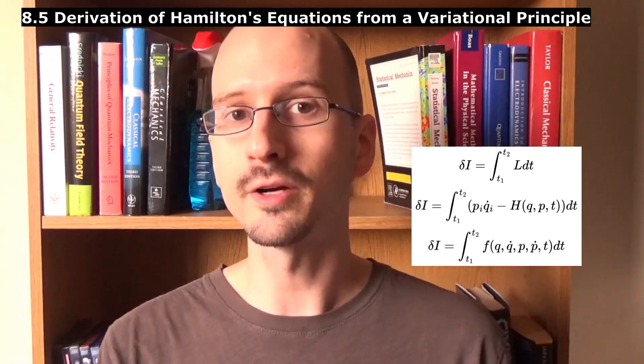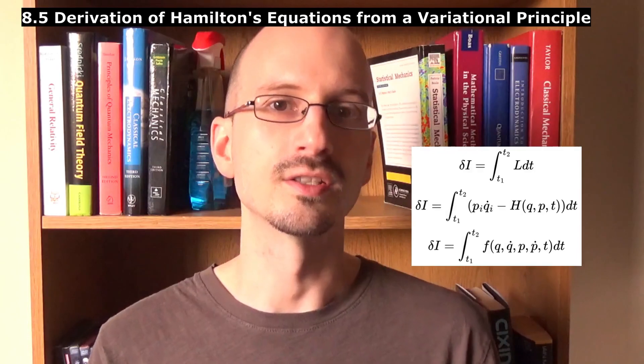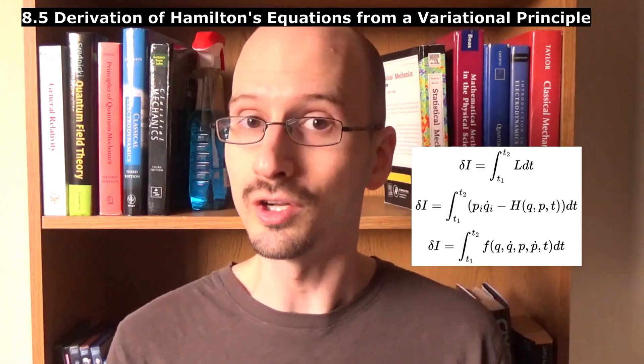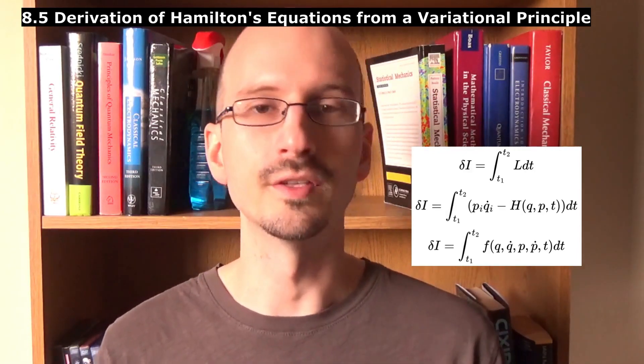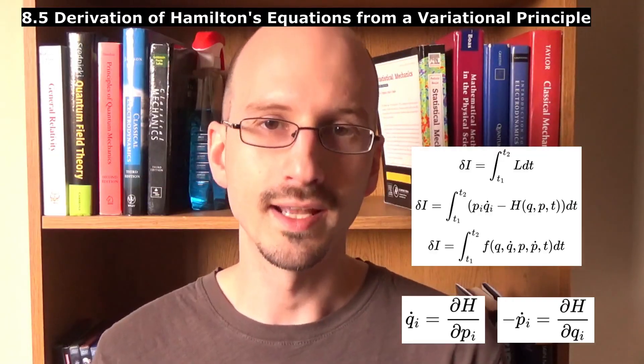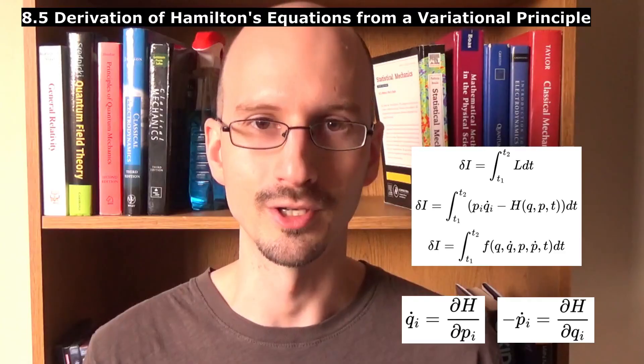Now that's a lot of variables, but we can do the same calculus of variations that we did with the Lagrangian on all of these variables. And with a few tricks of algebra, we end up with the Hamilton equations of motion.